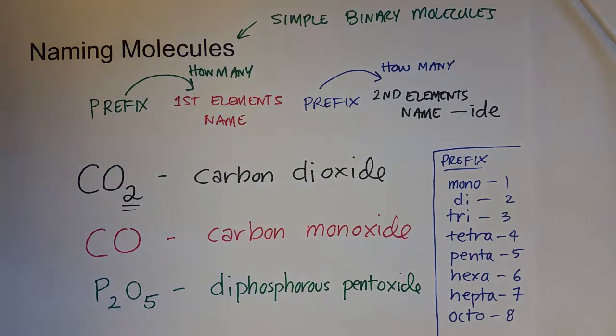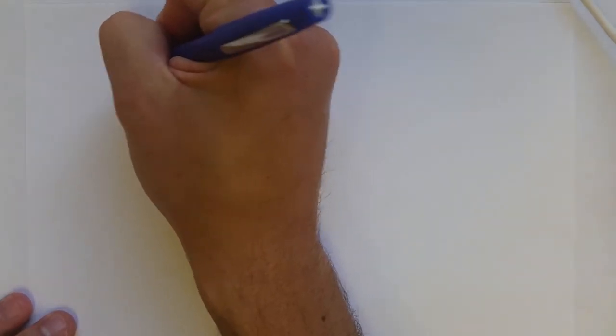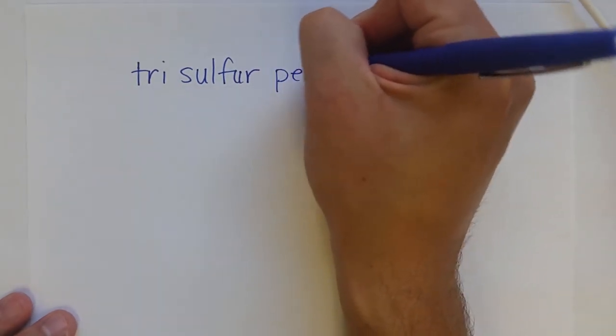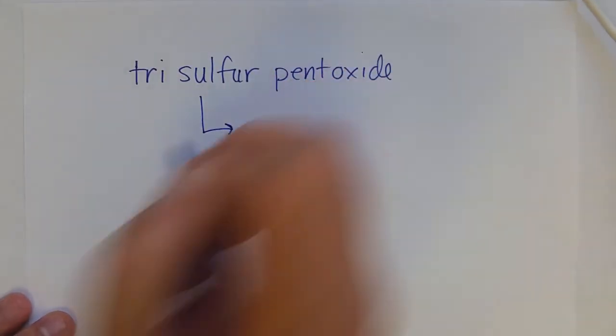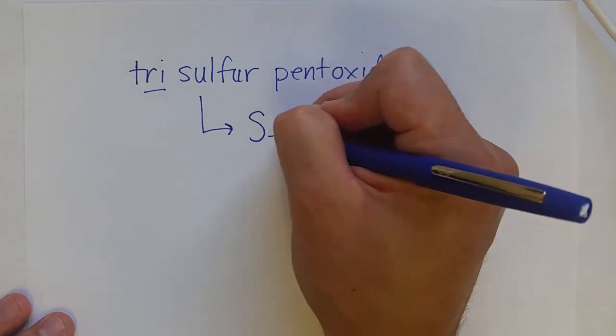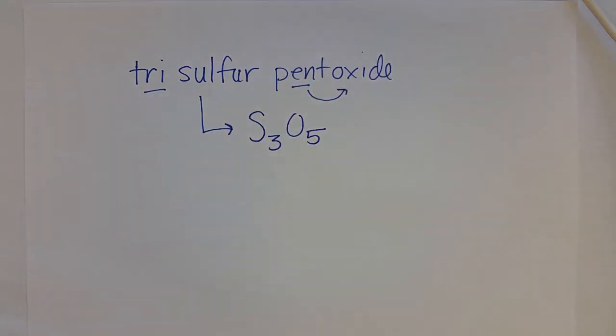Of course, we might need to be able to come up with a formula from a name. And so we could come up with the formula for, say, trisulfur pentoxide. This molecule starts off with S, and there's three of them, and then there's five oxygens, so O5.